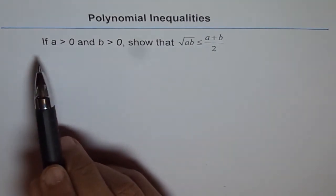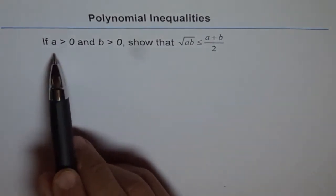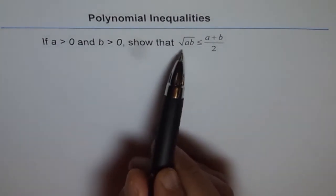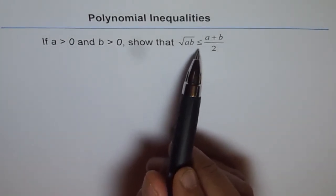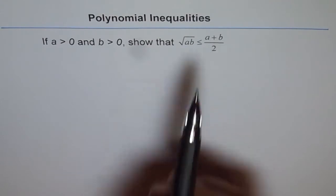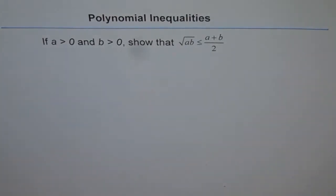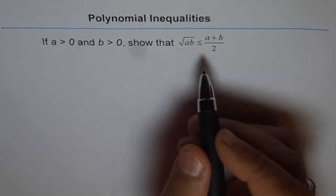Now, let us read the problem once again. If A is positive and B is positive, both are positive, show that square root of AB is less than or equal to A plus B over 2. So square root of AB is valid because both are positive. So both are real numbers.